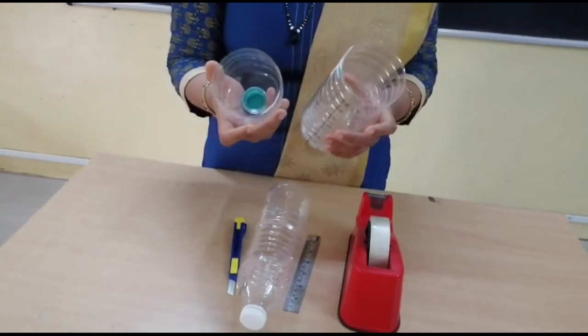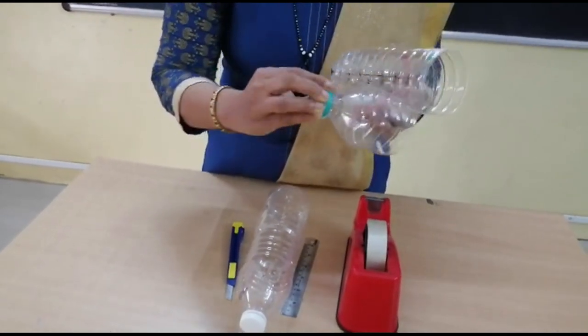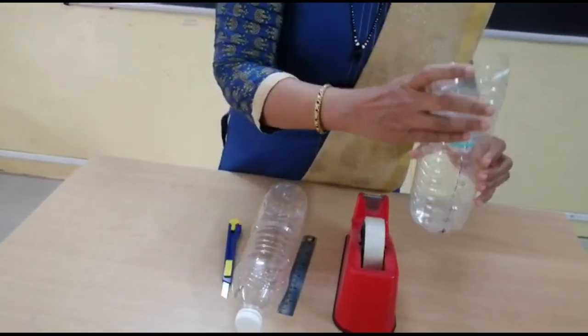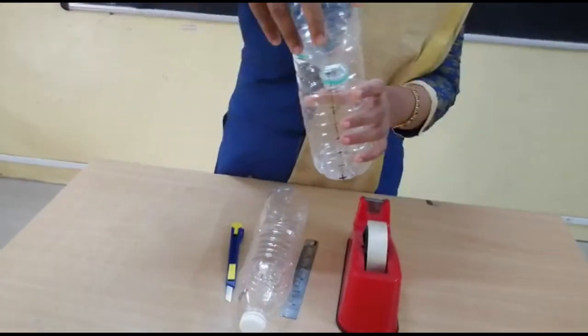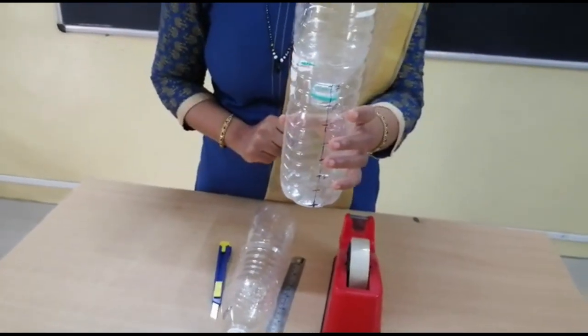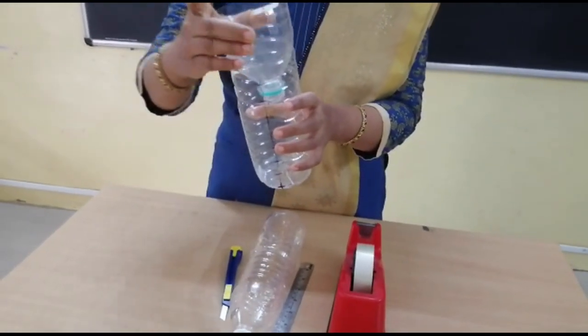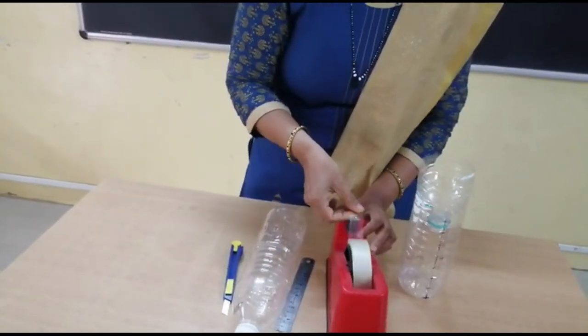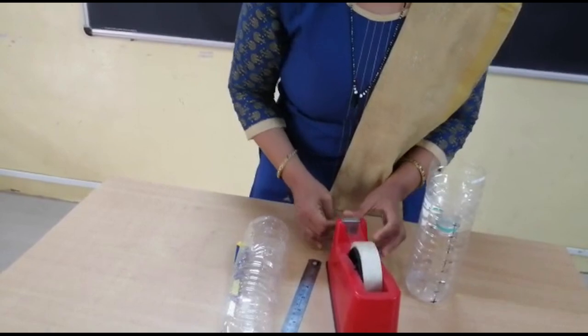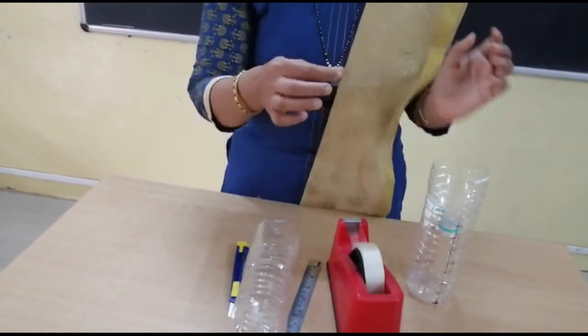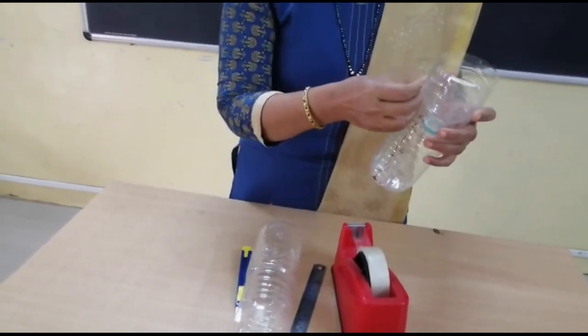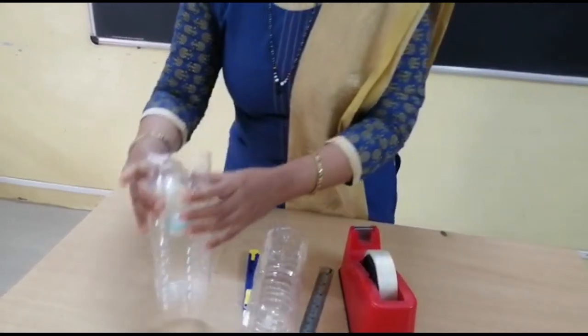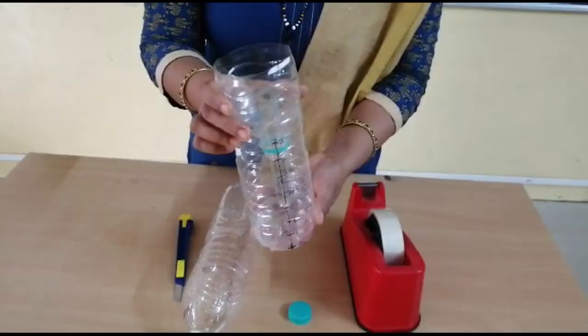Now you have to remove the lid of the bottle and place this upper part of the bottle inverted in the lower part of the bottle. You can see it is loose, so we need to fix it properly so it will not move. For that purpose, we'll use cello tape. Fix it with the help of cello tape around completely.